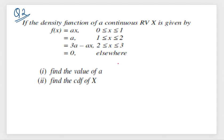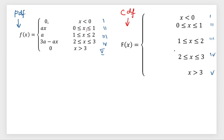Now I want to move ahead with a question having more than two intervals. We observe there are three intervals with some function available and elsewhere it is zero. I will also cover one more point — finding an unknown constant. Since there are three intervals and before 0 and after 3 there is no function, we get five intervals in total.